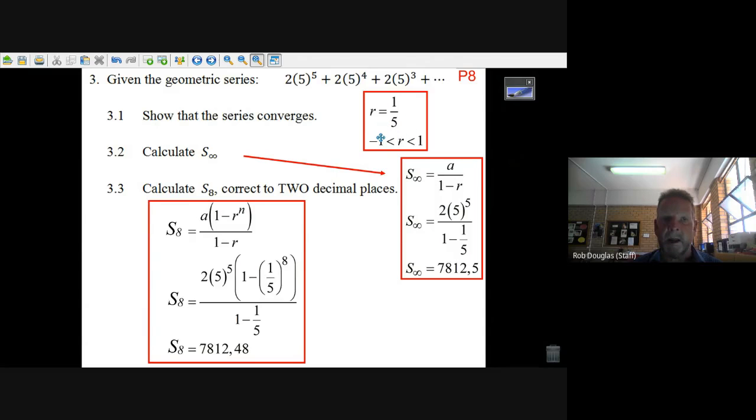Then they say find the sum of this series to infinity. So what's the first term a? Well, a is 2(5^5). What's r? It's 1/5. Then you just type this in your calculator and you get 7812.5, and that's your answer.